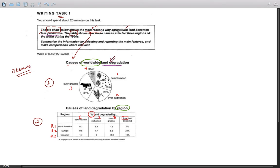And this is for the whole world. The table shows how these causes affect three regions of the world during the 1990s. Now, what are the causes? The main causes are number one: deforestation, number two: over-cultivation, number three: over-grazing, and finally number four: others.